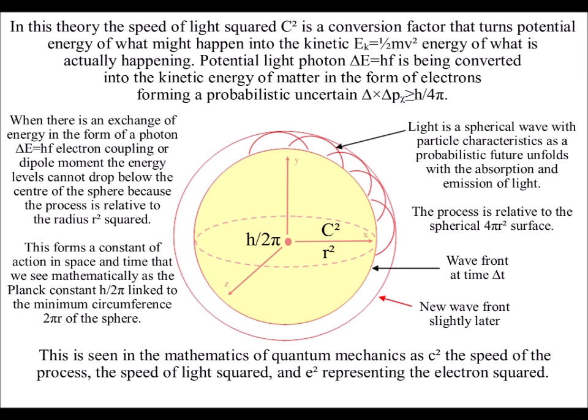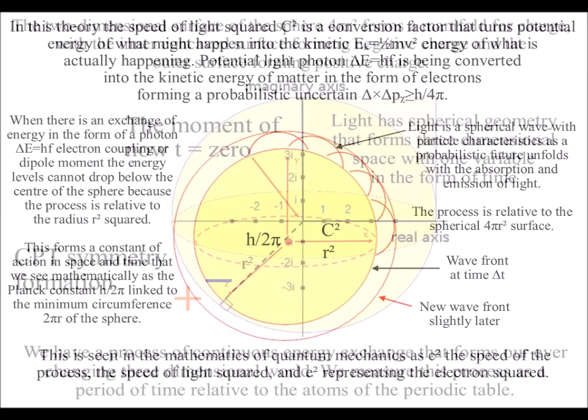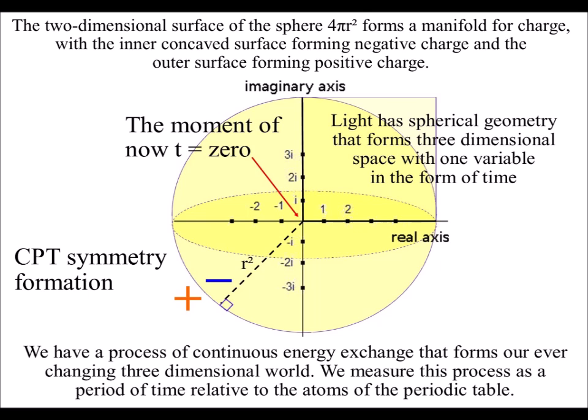This is seen in the mathematics of quantum mechanics as c squared — the speed of the process, the speed of light squared — and e squared, representing the electron squared. Spheres always intersect as circles, and this is why we have 2 pi in the mathematics of quantum mechanics.